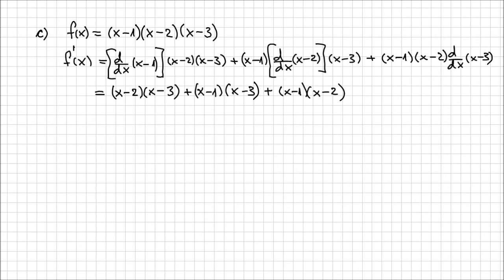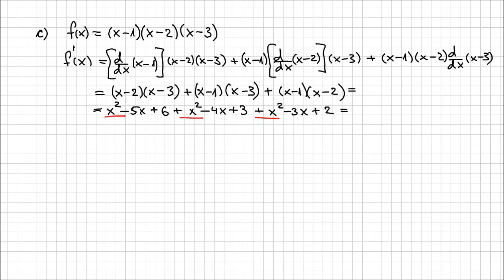Now we expand each product: (x-2)(x-3) = x² - 5x + 6; (x-1)(x-3) = x² - 4x + 3; (x-1)(x-2) = x² - 3x + 2. Adding like terms — three x² terms, the -5x, -4x, and -3x, and constants 6, 3, and 2 — we get 3x² - 12x + 11. So this is the derivative of the function.